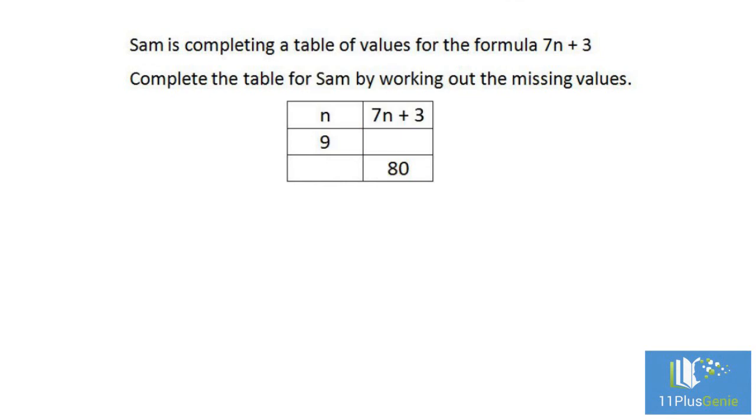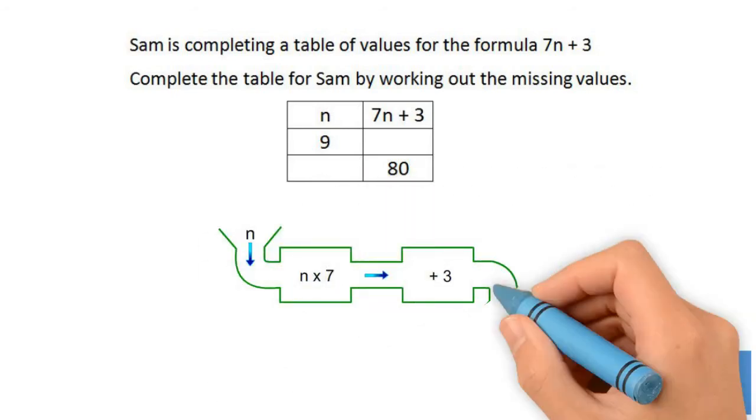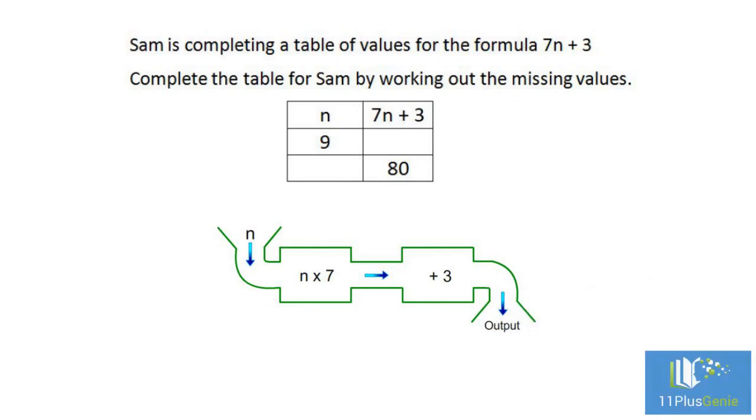Another type of question to which we can apply a number machine: Sam is completing a table of values for the formula 7n + 3. Complete the table for Sam by working out the missing values. If we represent this as a number machine, n is the input, the machine multiplies the input by 7, and then adds 3 to the result.